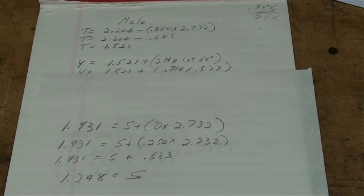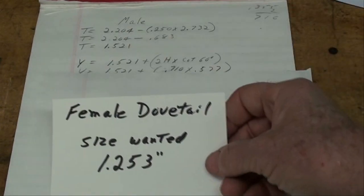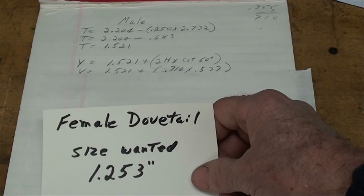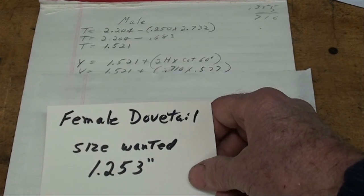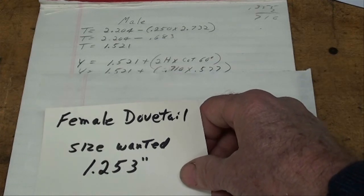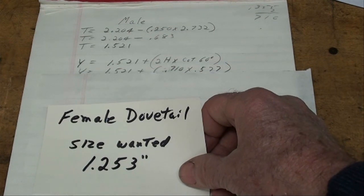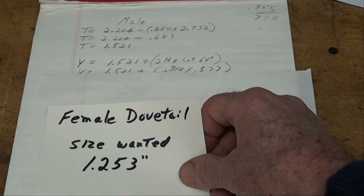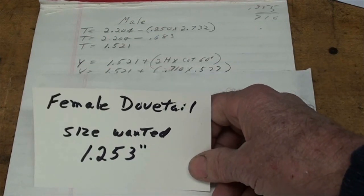In order to get the dimensions for the female, we do have to go through this and do a little algebra, ending up with S being 1.248, which is the desired size. But we want to make it just a little bit bigger so we don't have to struggle with it and drive it on with a brass hammer. I finally decided to make it 10 or 12 thousandths larger.